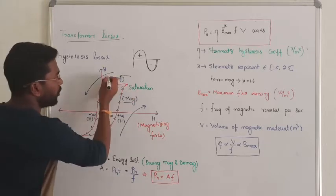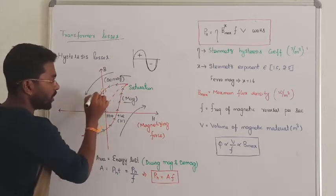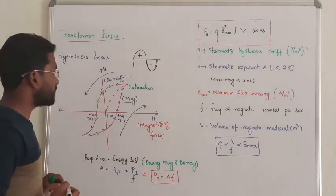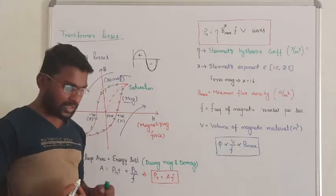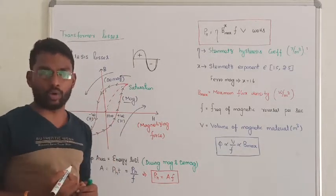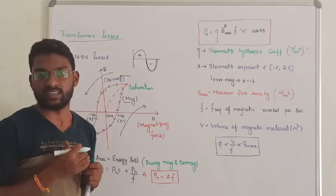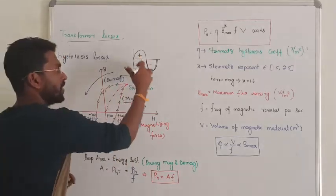But what about your magnetic flux density? My magnetic flux density does not become zero. Why? Because the transformer magnetic core does not accept sudden change. You suddenly reverse the polarity from positive to negative.